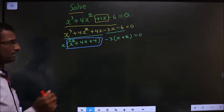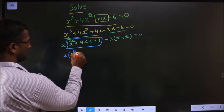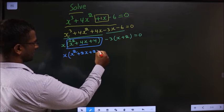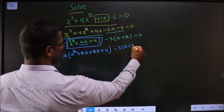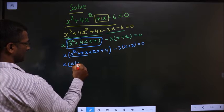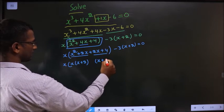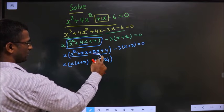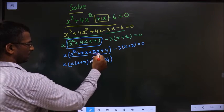We will factorize it. That is x times x square. In place of 4x I will be writing plus 2x plus 2x plus 4, minus 3 times x plus 2 equal to 0. From the first two terms, x and plus 2x — from plus 2x, x is gone inside, so outside is plus 2. You can multiply and verify.